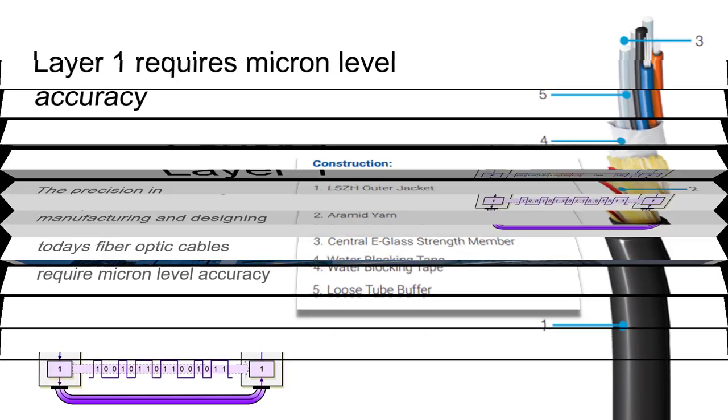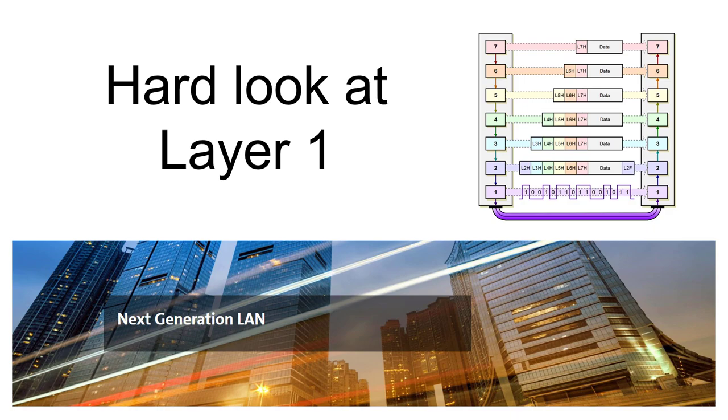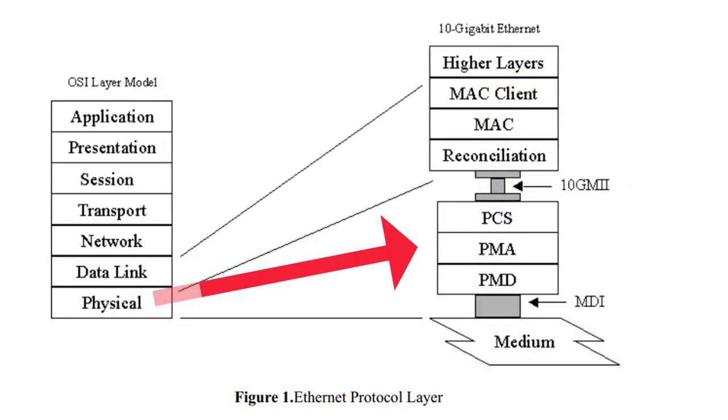Let's pause and take a hard look at what happens at layer 1. The physical layer can actually be broken down into three sub-layers. Let's look at each of them.